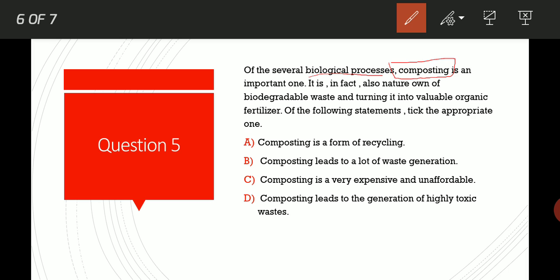Composting is a form of recycling. Recently we studied what is recycling. There are mainly three R's: reuse, recycle and reduce. Option B: Composting leads to a lot of waste generation. Option C: Composting is a very expensive and unaffordable process. Option D: Composting leads to the generation of highly toxic waste. The correct option is Option A, composting is a form of recycling in which the waste products are used again by nature itself.